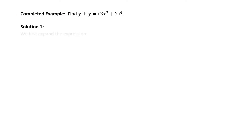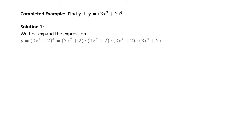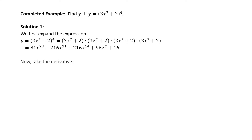Solution 1: Let's carry out the multiplication. That is, y equals the quantity 3x to the 7 plus 2 all raised to the 4th, which equals that term multiplied by itself 4 times. Expanded, that is 81x to the 28th plus 216x to the 21st plus 216x to the 14th plus 96x to the 7th plus 16.